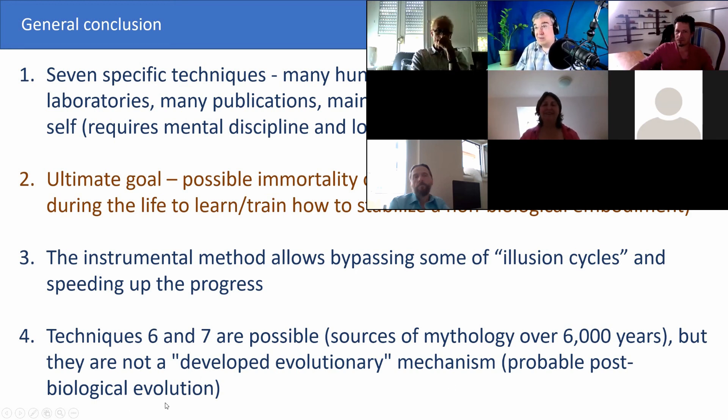Techniques six and seven, of course, have a lot of open questions. But we think they are possible, and they are not developed by evolutionary mechanisms — we need to develop them from scratch. They probably represent a new non-biological evolution with a lot of implications even from a philosophical side. Some points may sound unusual or not fit into the framework of classical ideas. Exactly here, instrumental feedback shows its usefulness in separating the real from the illusory and enabling focus on real processes. If you have any questions, please post them in the comments. Welcome to the next seminar.